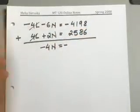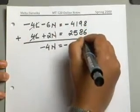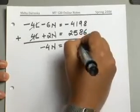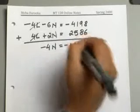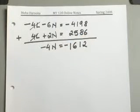So you subtract the two numbers, and we'll, of course, keep the sign of the greater number. And this will give us 1612.